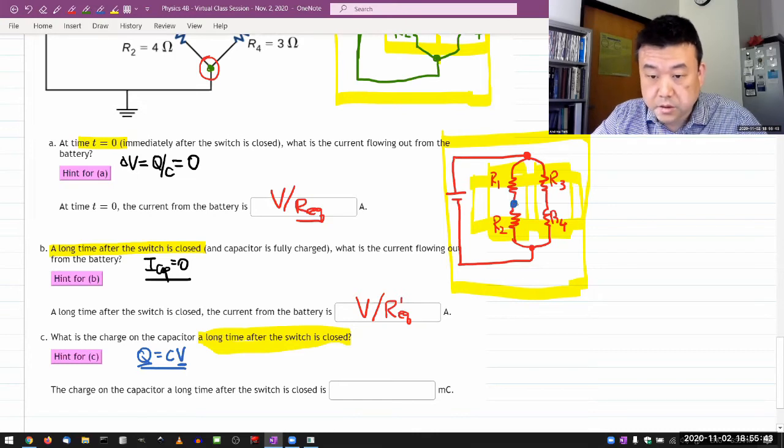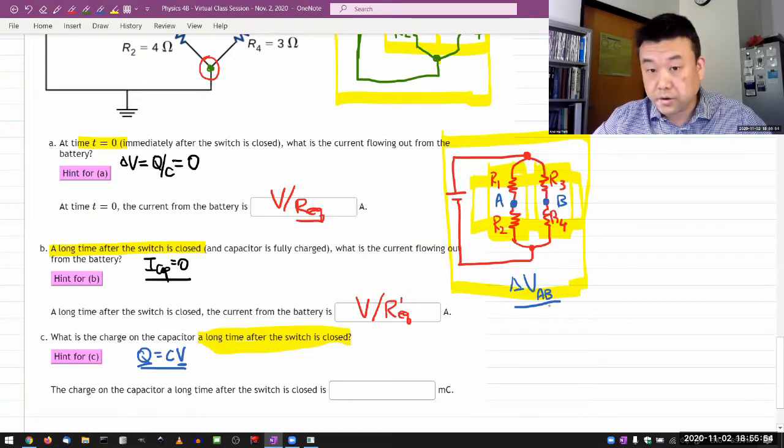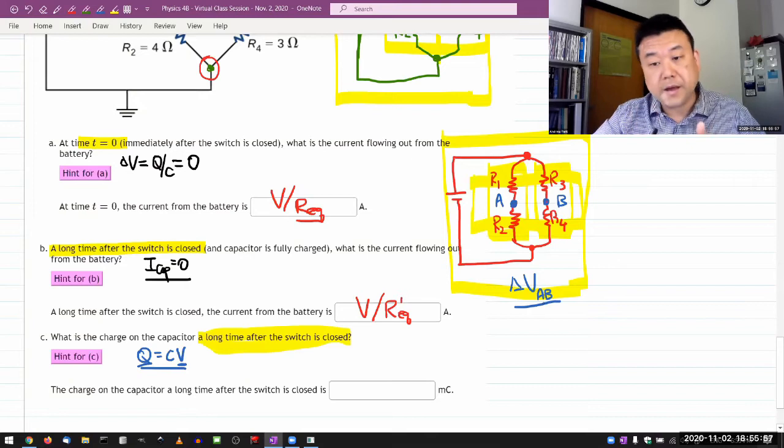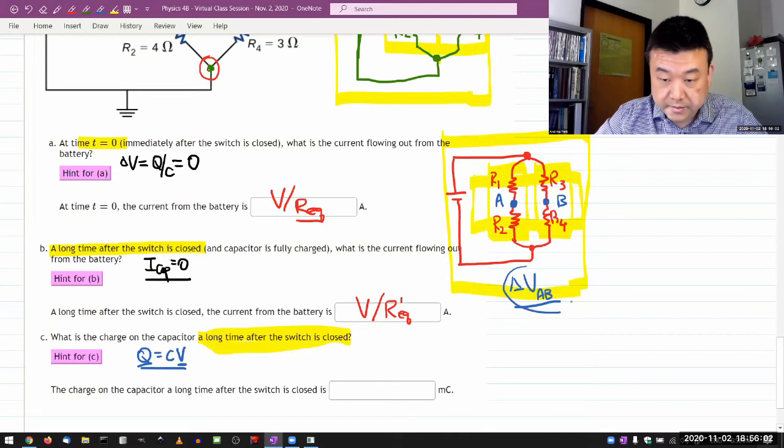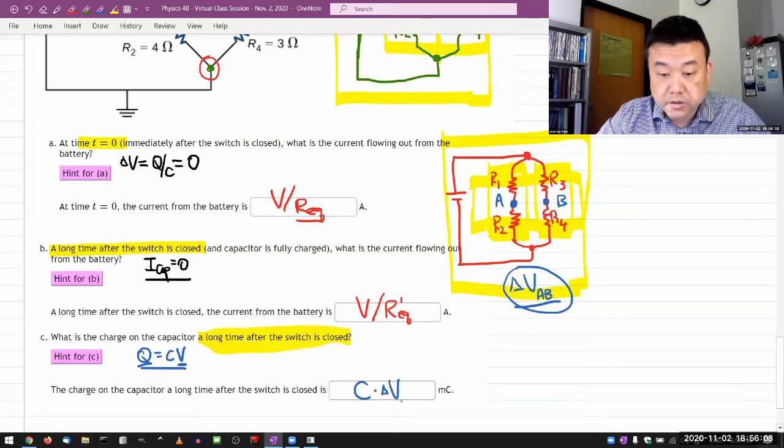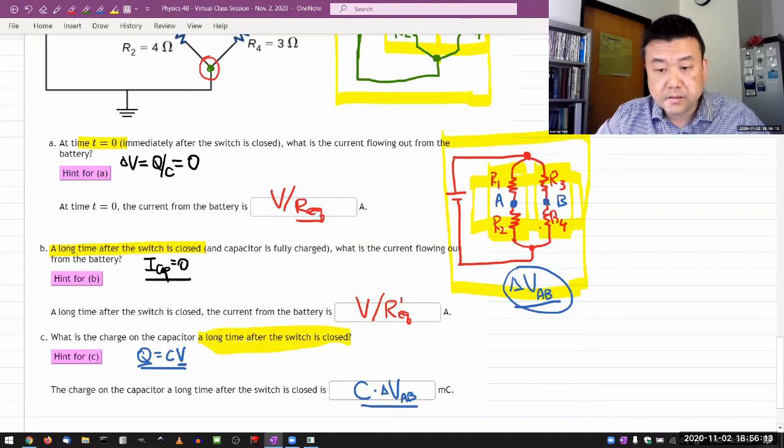So what I'm looking for is actually the voltage difference across from point A to point B. Once I know delta VAB, then that's my voltage drop across the capacitor. And that will lead me to the charge. So once I find this, then I can write down my answer as the capacitance, which was given, times that voltage change across those two points.